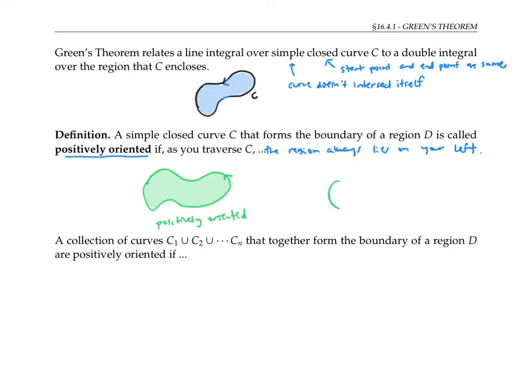If I were to orient it the other way, so that the region lies to my right as I travel around the curve, that would be negatively oriented.